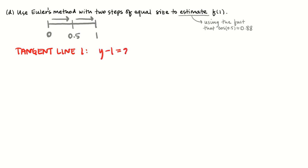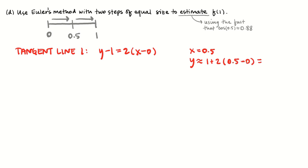That's y minus 1 equals 2 times (x minus 0). My first step takes me from x equals 0 to x equals 0.5, so my new point — I'm just plugging in to get a new point — x equals 0.5, and y is going to be approximately equal to 1 plus 2 times (0.5 minus 0), which is 1 plus 1, giving us 2. So I've got a new point: x equals 0.5, y equals 2, and I'm going to write down a second tangent line.